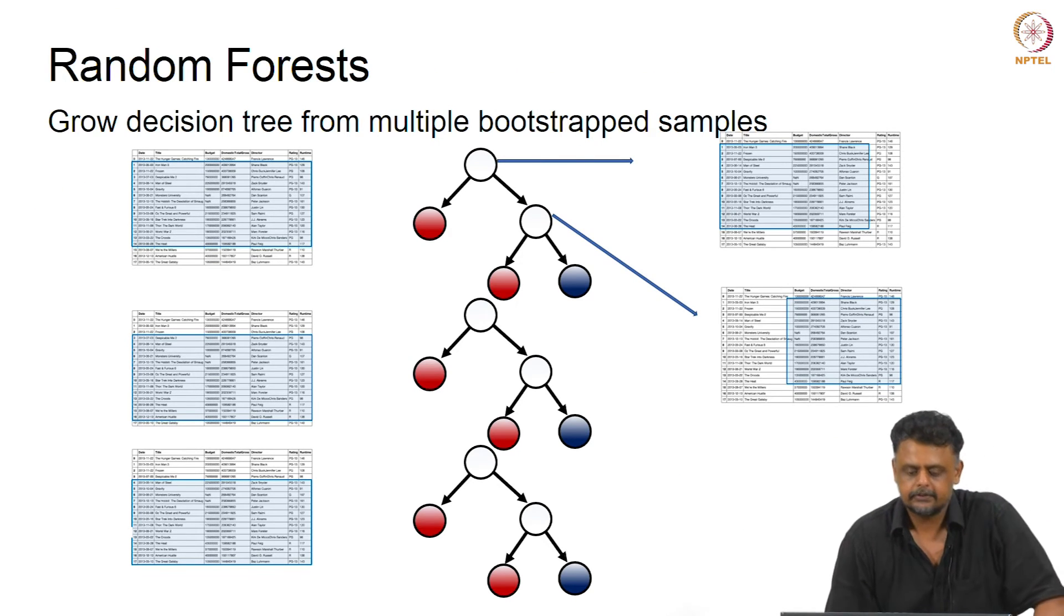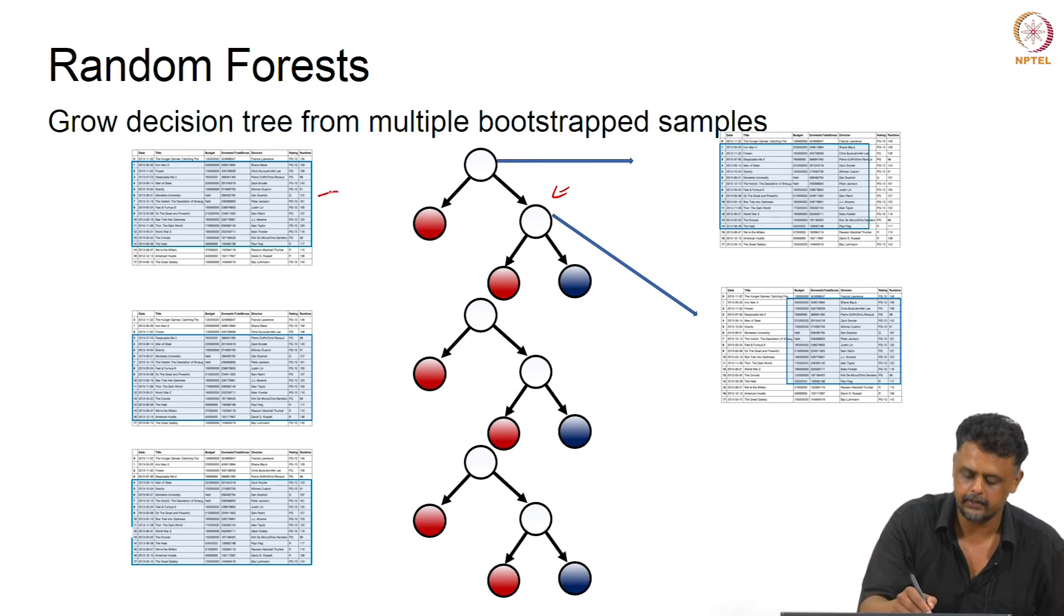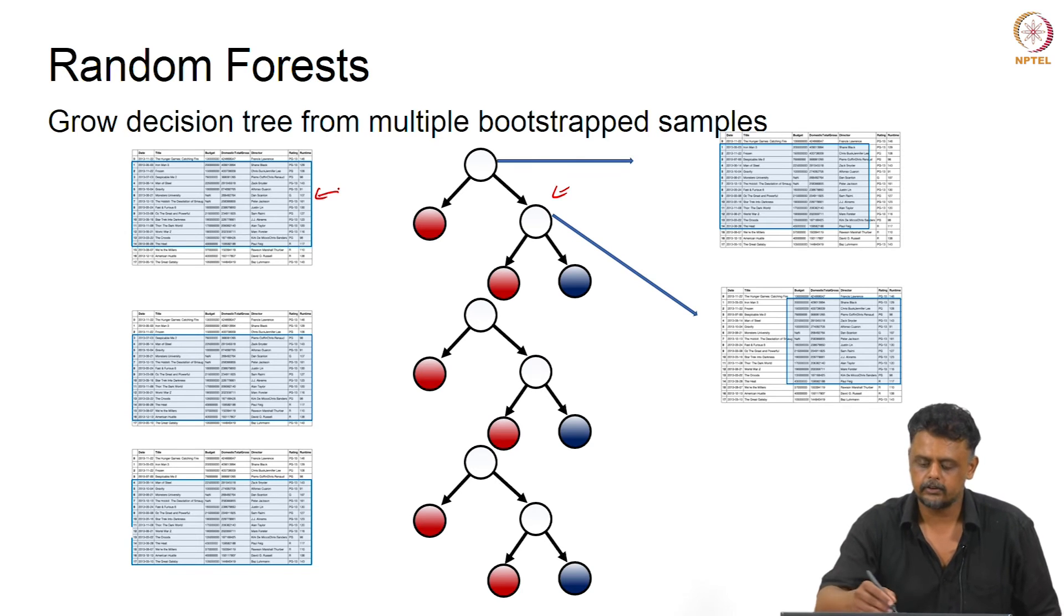For random forests, again we grow decision trees from multiple bootstrap samples, with the exception that the features will be chosen at random. We won't use all the features. At the root node, I have cut out these two features, these two columns. At this particular node here, I've left out the title feature again and grown by the centering. The difference between bagging and random forests is that when we grow these multiple decision trees from bootstrap samples, we not only bootstrap the training data set, but we also only choose a subset of the features available at every node in every tree.